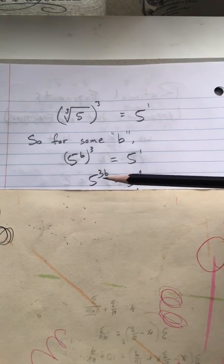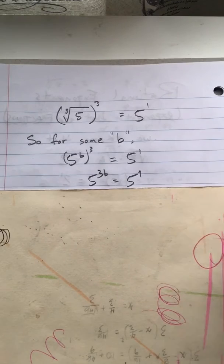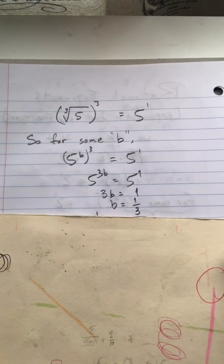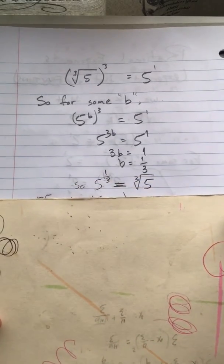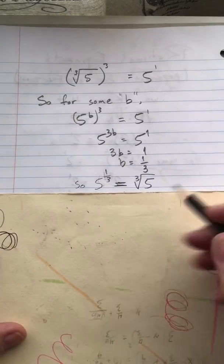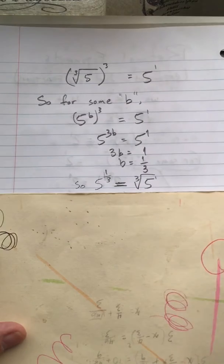So, just like before, that means 5 to the 3B equals 5 to the first. So, pretty quickly, you're going to figure out that B equals one-third in the same way. So, what we're saying then is that 5 to the one-third is the same thing as the cube root of 5. And remember, there is a little 1 right there, even though we don't normally write it.